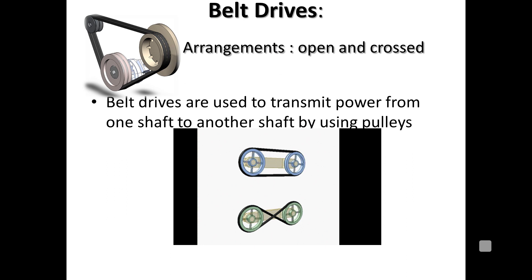The first topic we will discuss today is belt drive arrangements. There are two very common arrangements of belt drives: open and crossed belt drives. In the open arrangement, the two pulleys rotate and the belt is arranged in an open manner. In the crossed arrangement, the belts are wrapped around the pulleys in a crossed manner. The key difference is that in an open belt drive, the driving and driven pulleys both rotate in the same direction, whereas in a crossed belt drive they rotate in opposite directions.